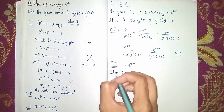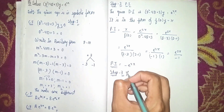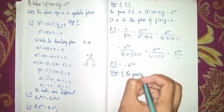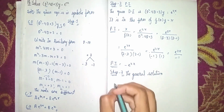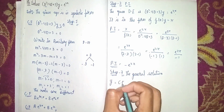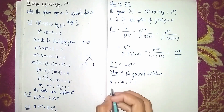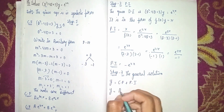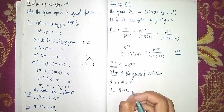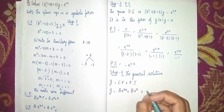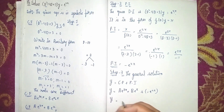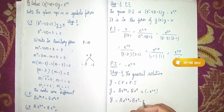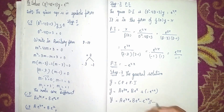Step 3: the general solution. The general solution is the sum of the complementary function and the particular integral: y = CF + PI. So y = Ae^(3x) + Be^(x) + (-e^(2x)), which gives the final answer: y = Ae^(3x) + Be^(x) - e^(2x). Thanks for watching.